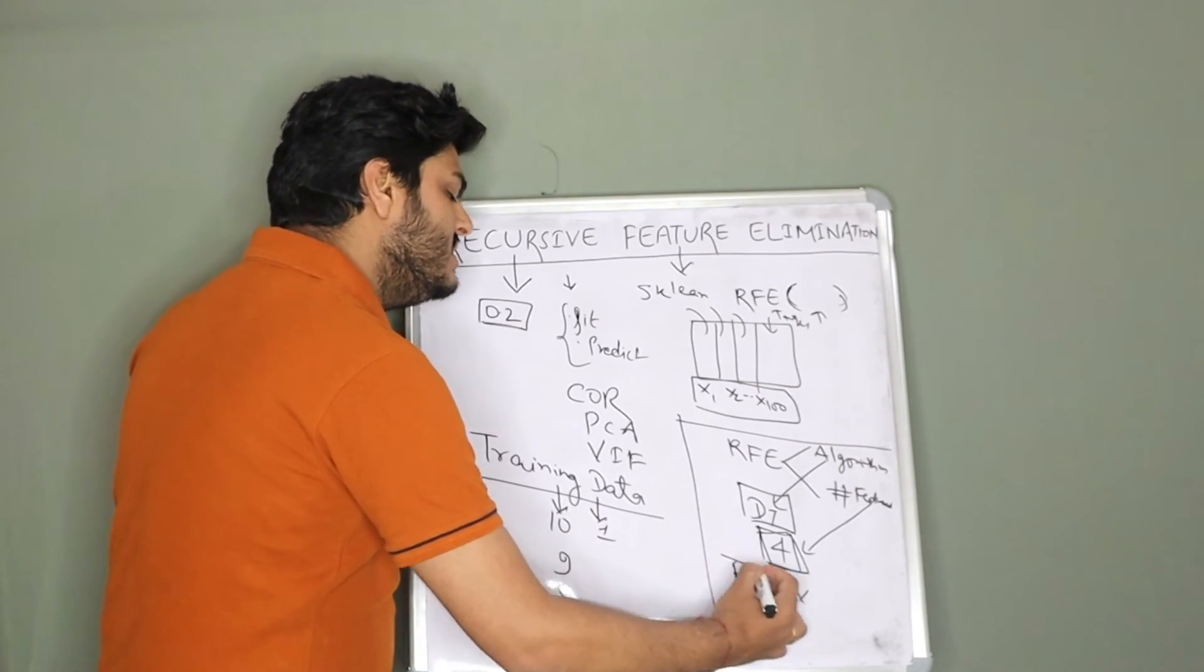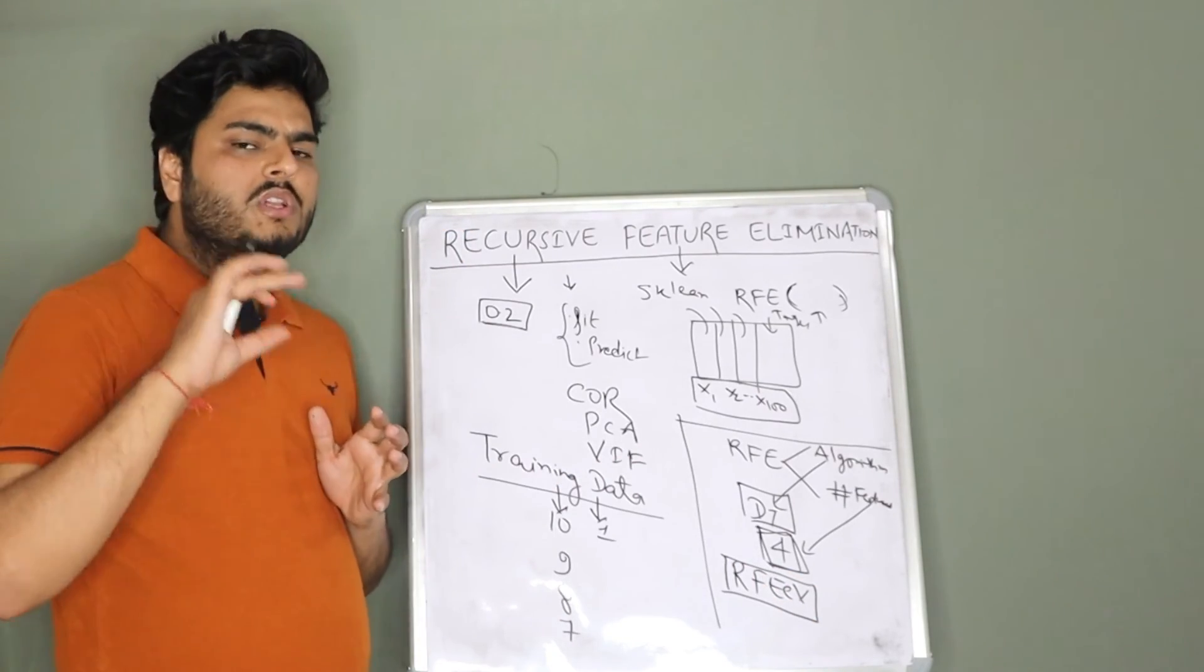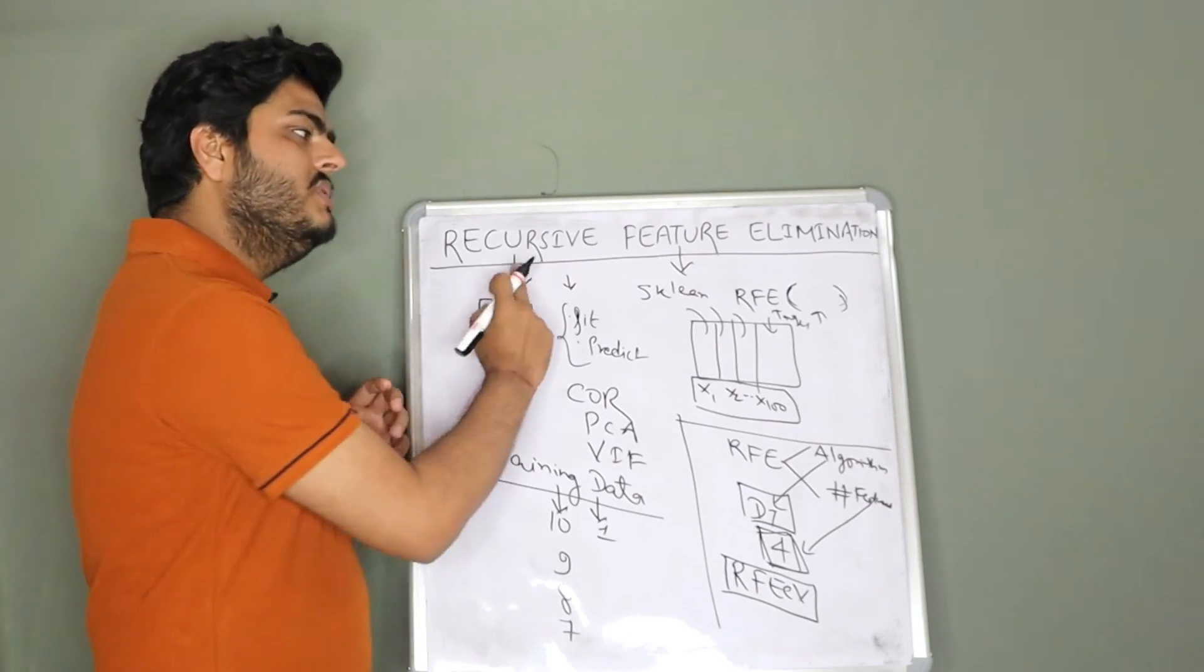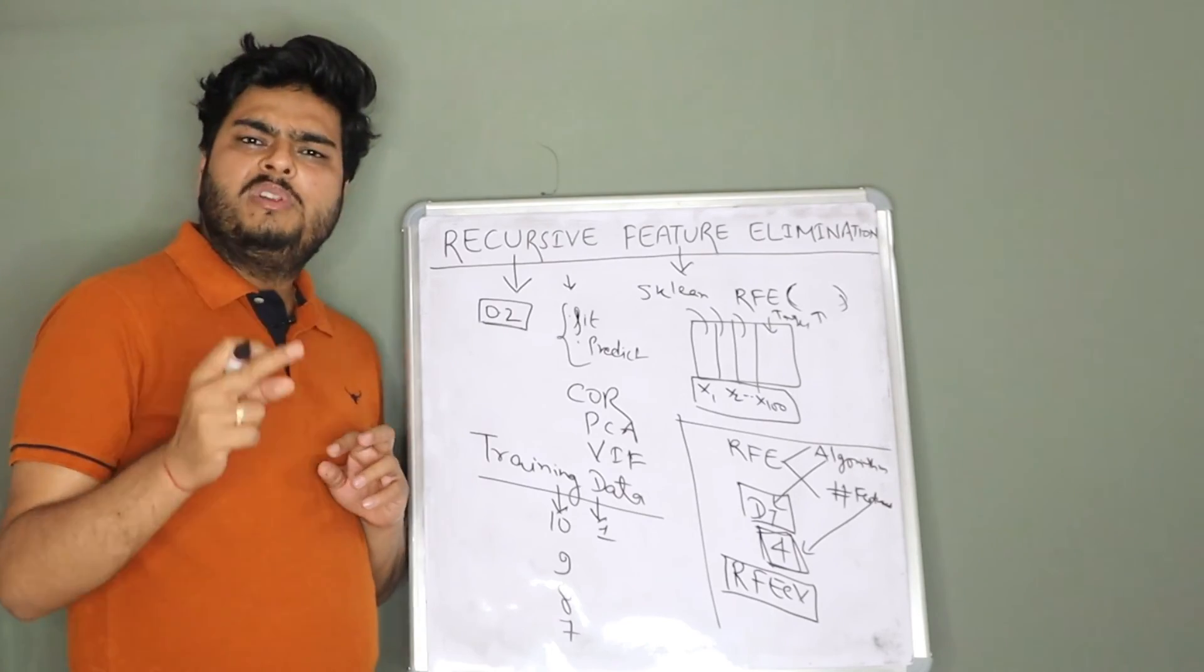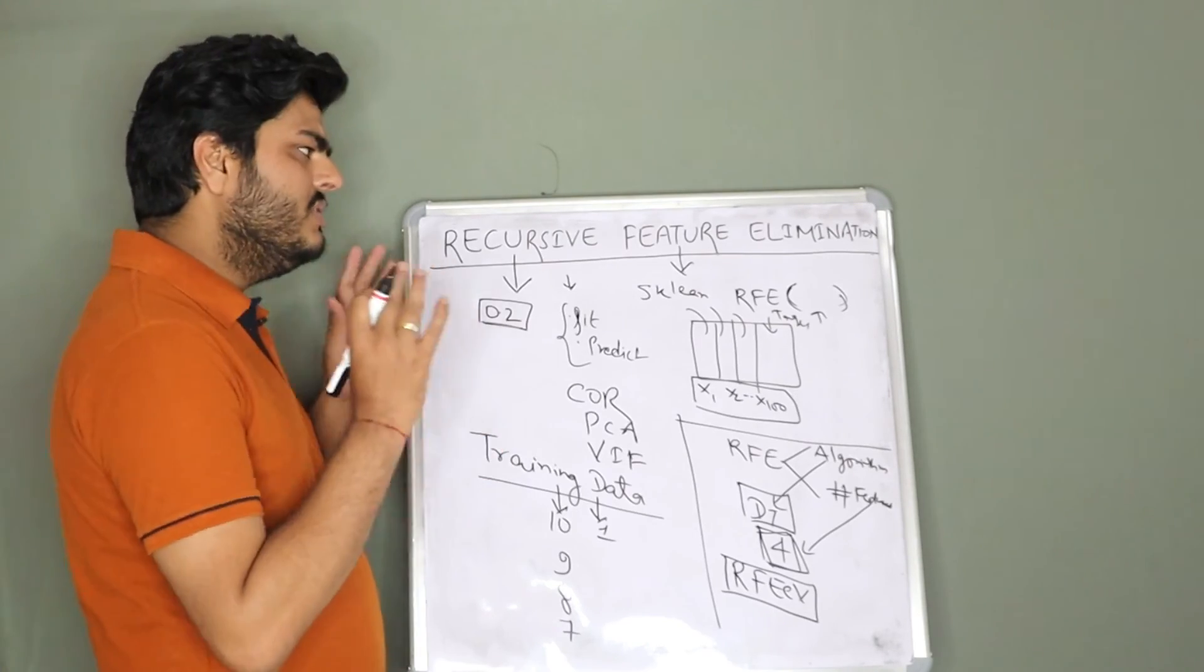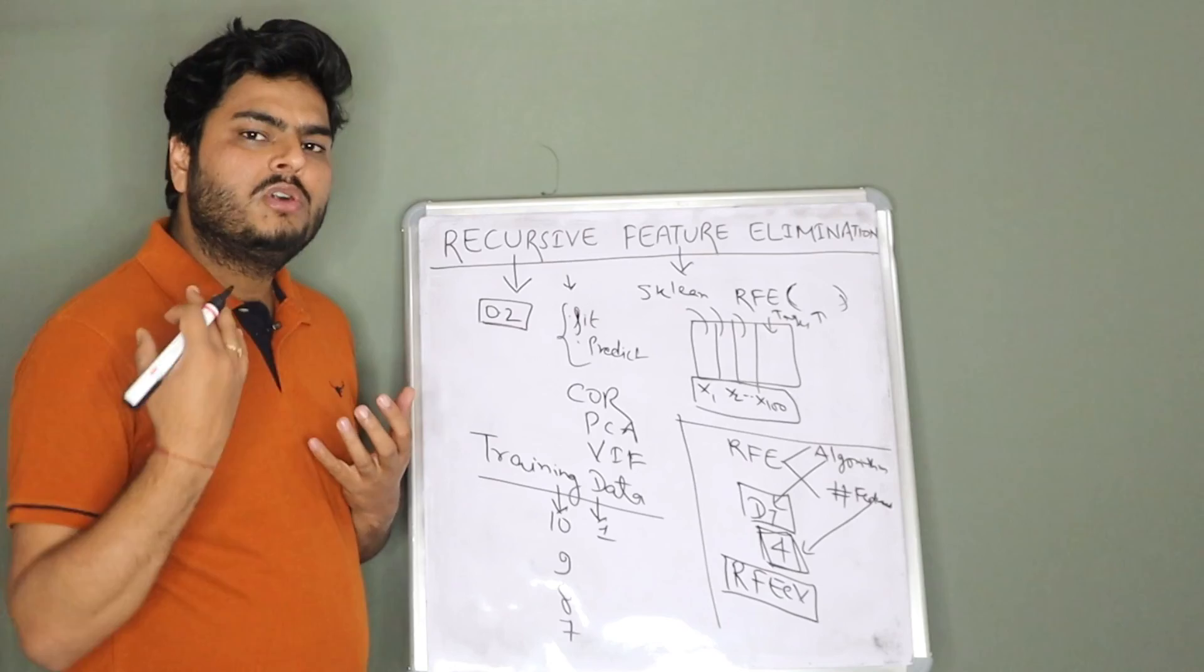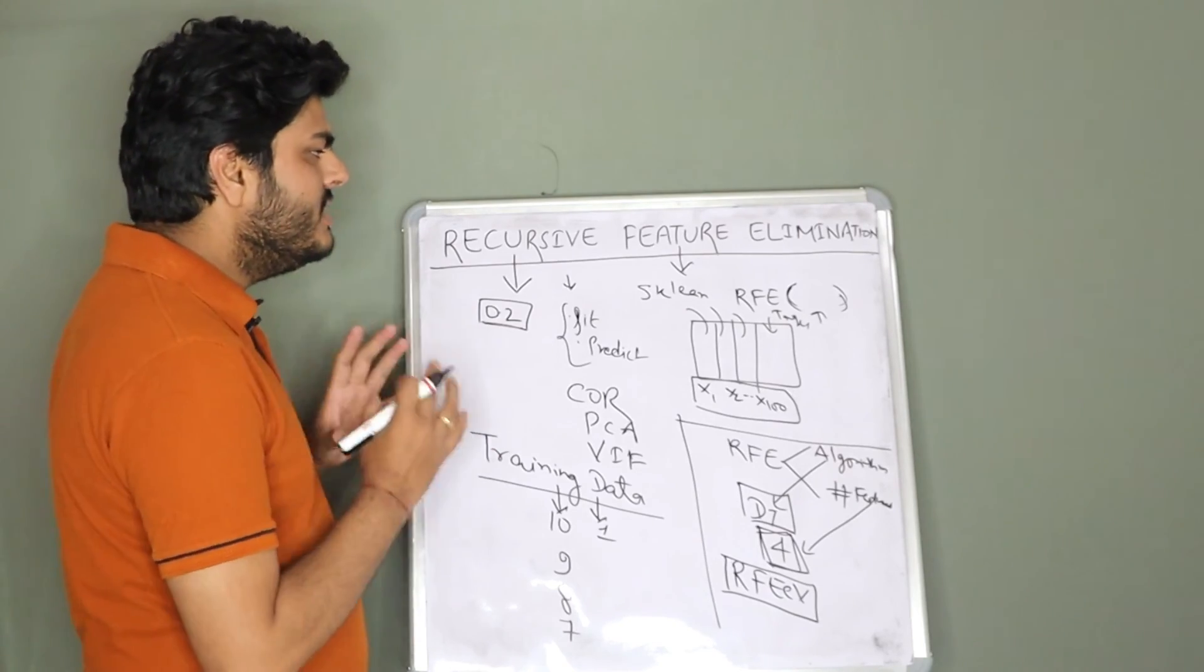What RFE-CV does, this is also available in Python. What RFE-CV will do is, it will just do a cross-validation on your data with recursive feature elimination and tell you, you know what, you do not need to explicitly tell me how many features you want. Let me run a cross-validation with RFE and give you, these are N important features for your model. And then you can take those features, train your model and go ahead with your prediction. That is what is RFE in a nutshell.